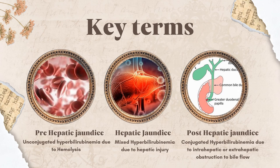Pre-hepatic jaundice is unconjugated hyperbilirubinemia, most commonly due to hemolysis. There are other causes of unconjugated hyperbilirubinemia like Gilbert syndrome and Krigler-Naggar syndrome, but these are not so common. You need to rule out hemolysis first. If you get a patient with jaundice and find unconjugated hyperbilirubinemia on bilirubin testing, think hemolysis first.